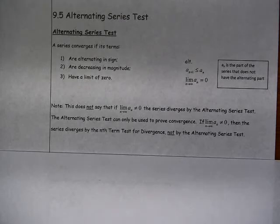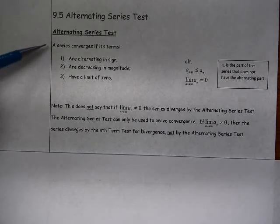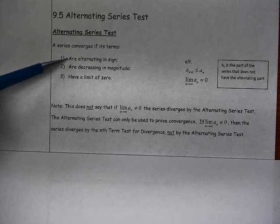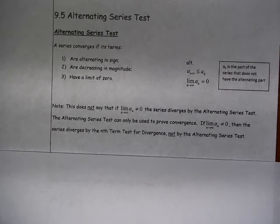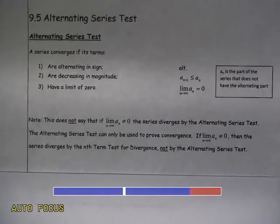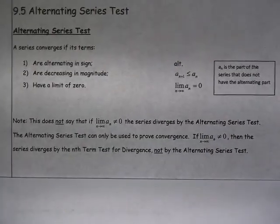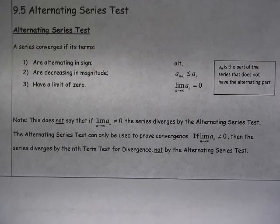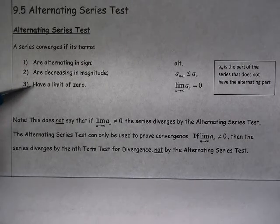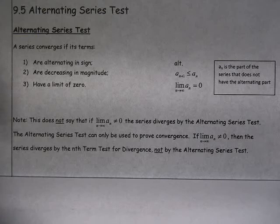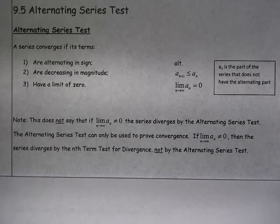The alternating series test is defined this way. If a series has terms that are alternating in sign, so we have positive, negative, positive, negative, they're decreasing in magnitude, so each term is smaller in magnitude than the preceding term, and the terms have a limit of 0, then our series converges by the alternating series test.